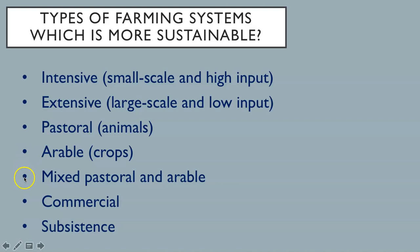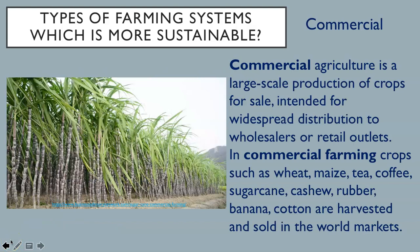There are also food production systems that mix pastoral and arable farming. Commercial agriculture is large-scale production of crops for sale, intended for widespread distribution to wholesalers or retail outlets. In commercial farming, crops such as wheat, maize, tea, coffee, sugarcane, cashew, rubber, banana, and cotton are harvested and sold in world markets. Pictured here is a sugarcane field.